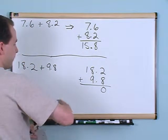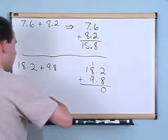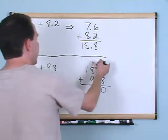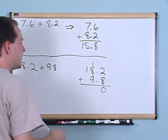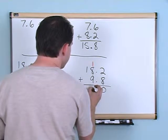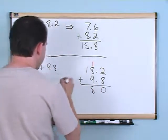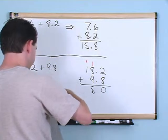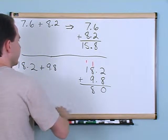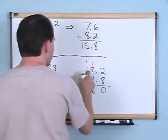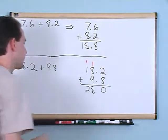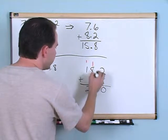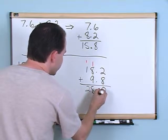8 plus 2 gives you 10, but 10 is too big to write down here because I have other values, so I'm going to put the 1 up in the next column — nothing is different, nothing has changed. 8 plus 1 is 9, plus another 9 gives me 18, so I put an 8 down there and carry the 1 over to the next column.